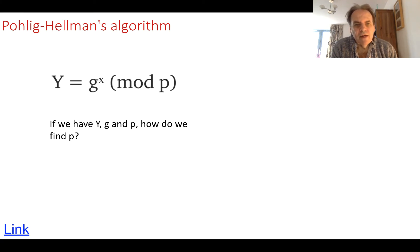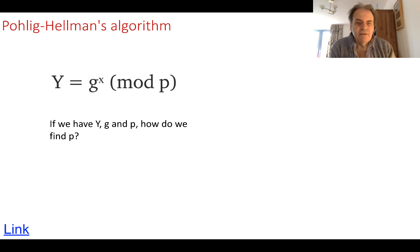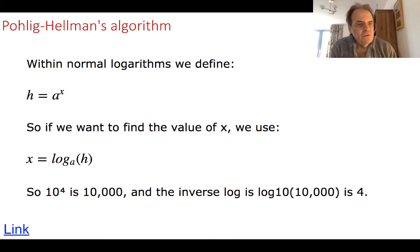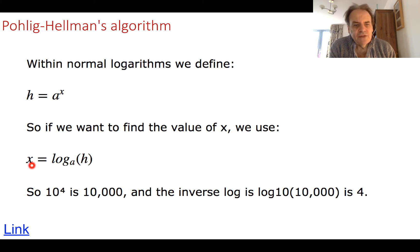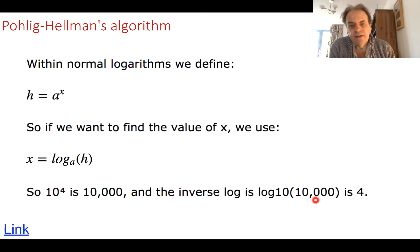The problem is that we have Y, G, and P and we want to find the value of X that produced that output Y. Within the finite field there will only be one value giving the corresponding Y given G and P. In normal logarithms, as discovered by John Napier, we have A to the power of X equals H, and the reverse is the log base A of H to give us X. For example in base 10: 10 to the power of 4 equals 10,000, and the inverse log base 10 of 10,000 is 4.